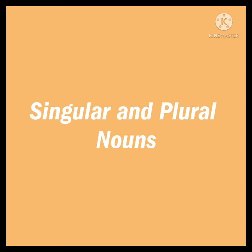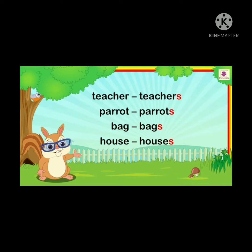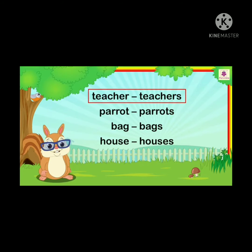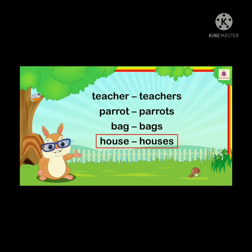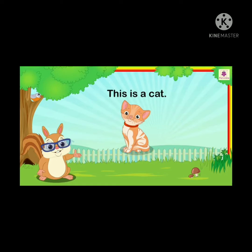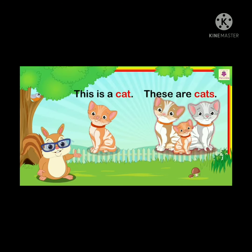Singular and plural nouns. A noun that denotes one thing is called a singular noun. A noun that denotes more than one thing is called a plural noun. For example: one person, many persons. One bird, many birds. One thing, many things. One place, many places. This is a cat. These are cats.